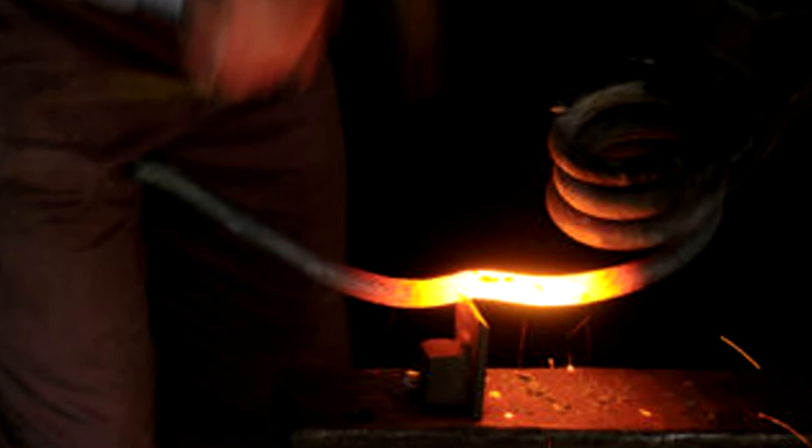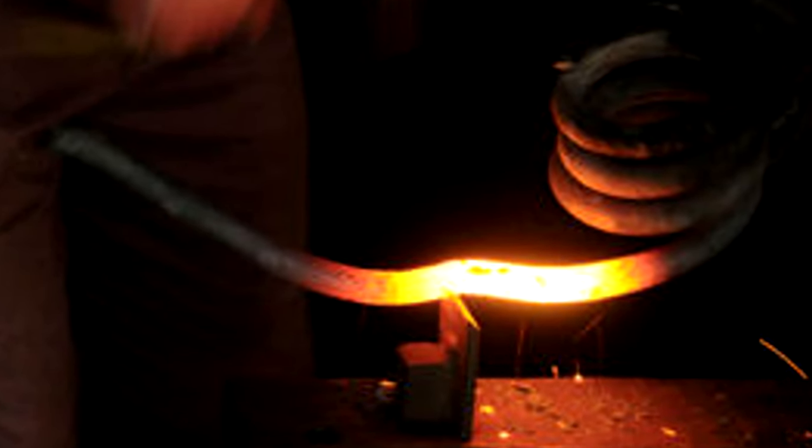Take a look at this iron rod as it heats up. See how it goes from red hot at the outer edges through yellow to white hot at the center? If we could get it hot enough, you'd see it turning blue.